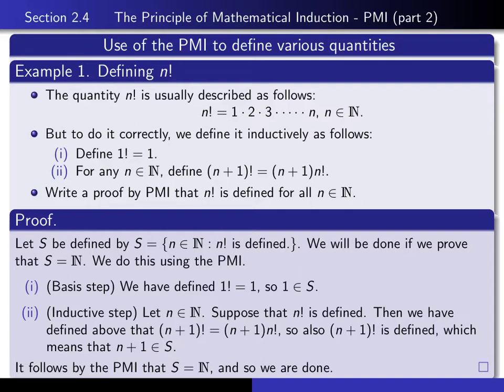So we have the right to say, by the principle of mathematical induction, that S is all of the natural numbers. This is the technique for deducing that, simply by writing down these two properties, one has defined the factorial function on the set of all natural numbers.